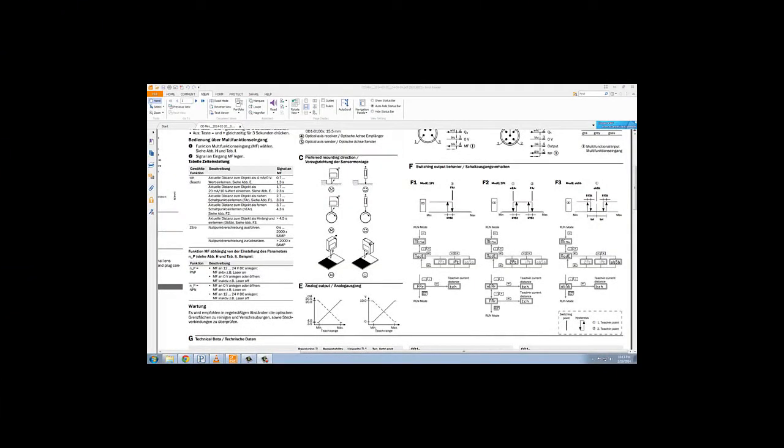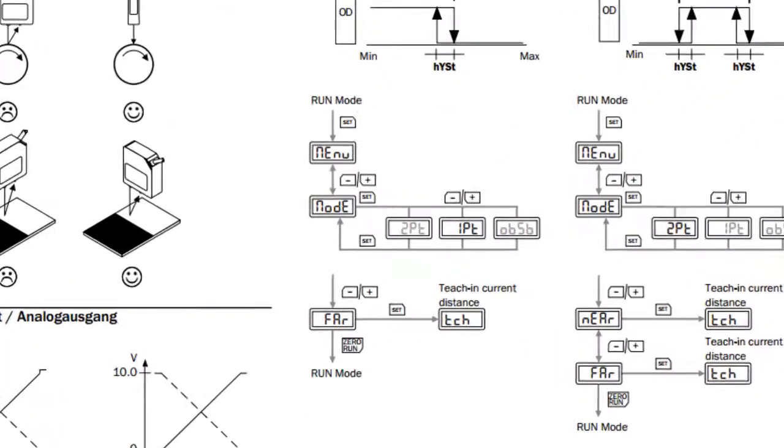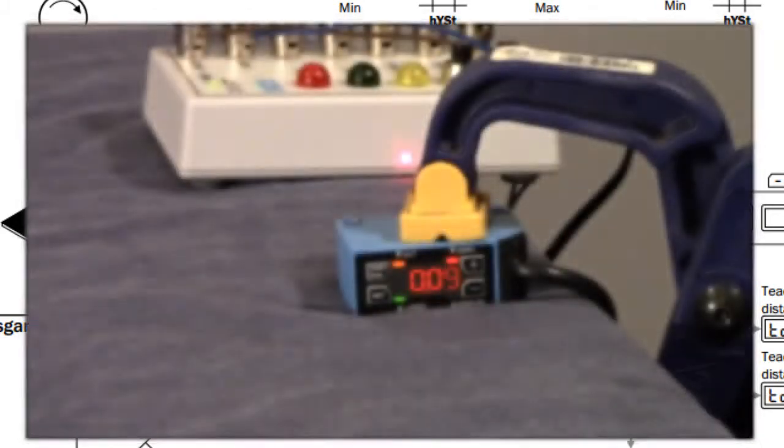To teach a one point teach, we're going to teach this far setting. So you hit the set button. It says menu and that is an M. Obviously, we're limited by the display. It looks like an N, but that would be menu. And then you're going to use the up and down arrow key to change it to the mode. And you're going to set a one point teach for the sake of this video. Which brings you then next to the far setting. And you move it to the distance where you want to get a one point teach. Anything closer than that distance and you'll get an output. And you want to hit the set button.